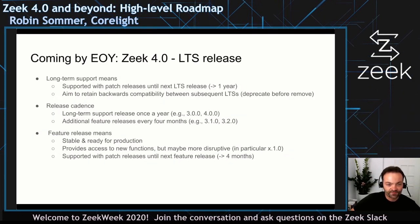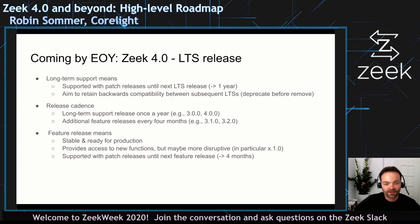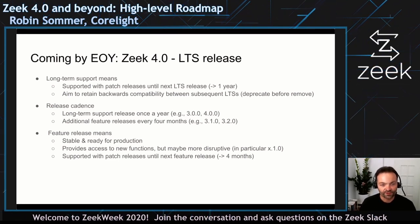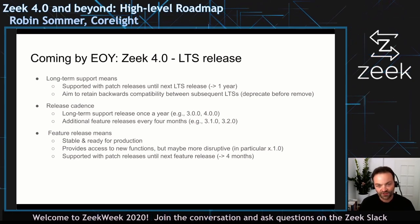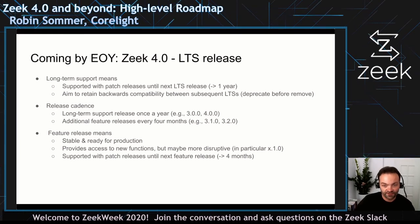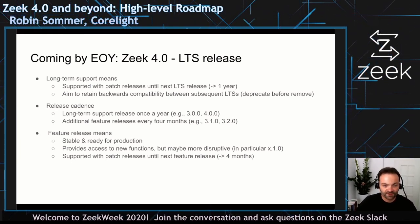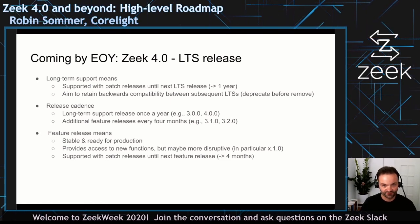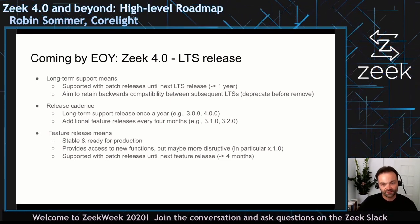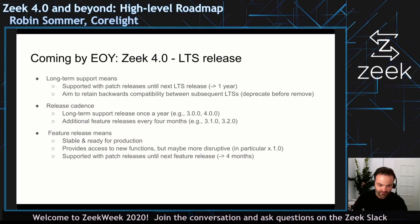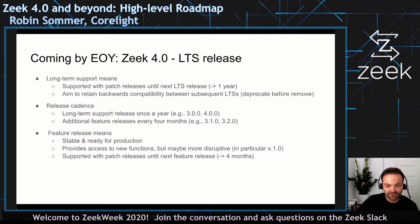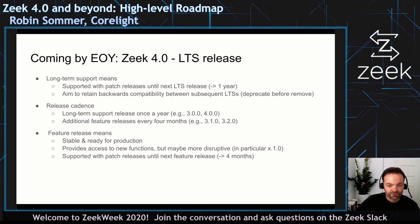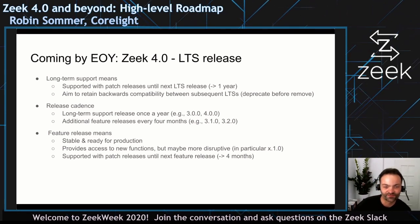The next big Zeek release coming up, scheduled by the end of the year, is 4.0, which will be another LTS release — a long-term supported release. Just like with 3.0, we will be supporting this version for a year with patch releases. We try to retain backwards compatibility between LTS releases. So for people who have been on 3.0, the time is coming to update. Our LTS releases come about once a year, and we have additional feature releases every four months.